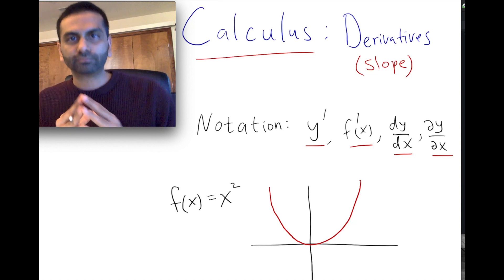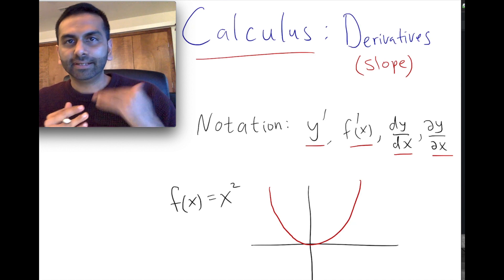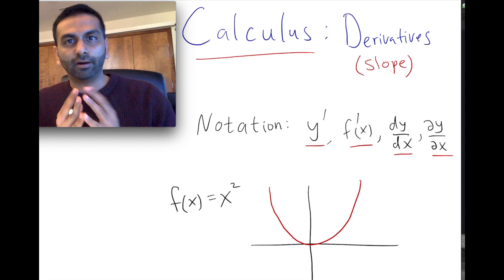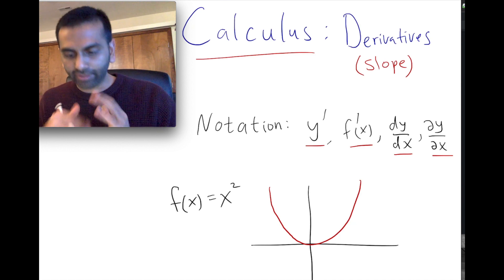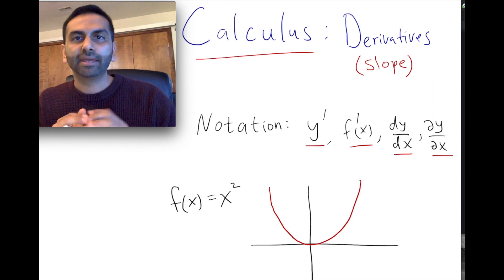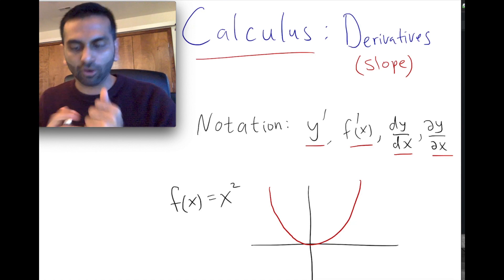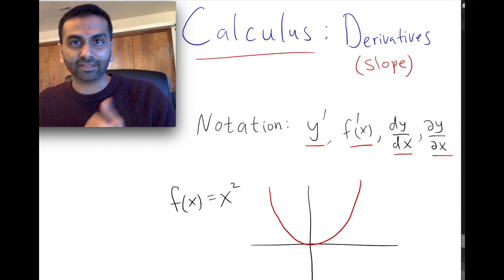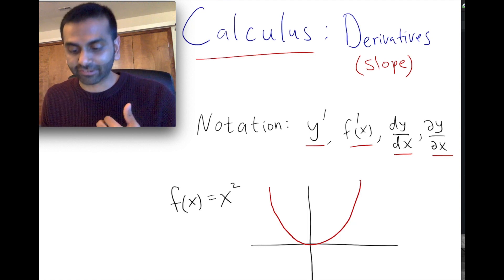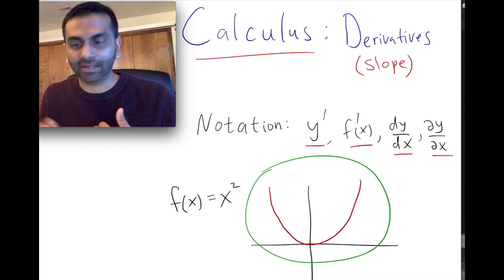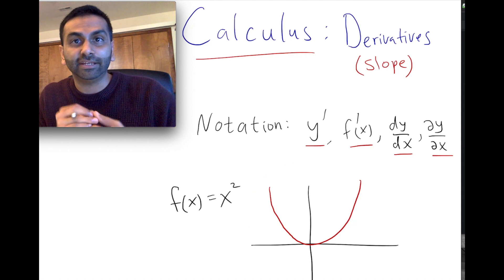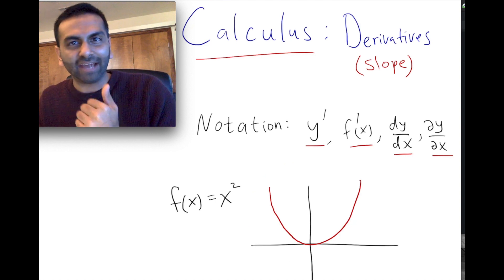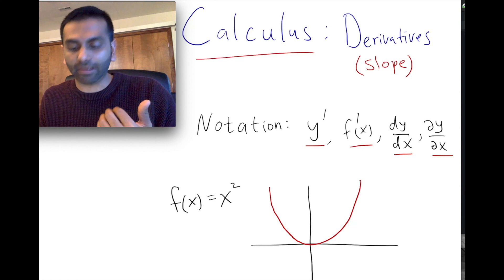So overall, long story short, calculus — derivatives in particular — are a way for us to look at a nonlinear function and say what the slope is at all these different points. Basically, the answer to the question 'what is the slope of a parabola' is that it's a function. And once you plug in a specific x value, you'll get the slope.